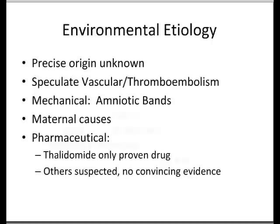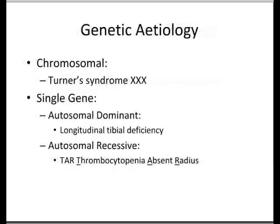In terms of genetic causes, there are some chromosomal abnormalities, such as Turner's syndrome. In single gene abnormalities, an autosomal dominant gene deficiency may cause a longitudinal tibial deficiency, and an autosomal recessive gene may cause TAR syndrome — thrombocytopenia and an absent radius — which I'll go into later.